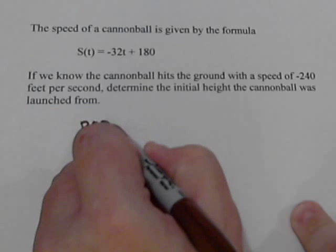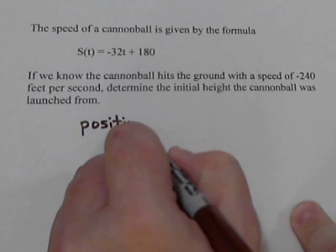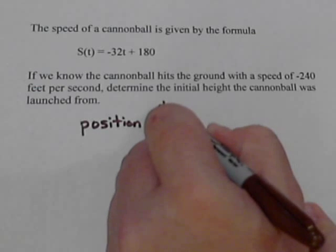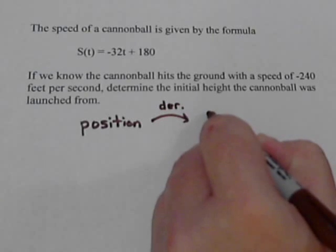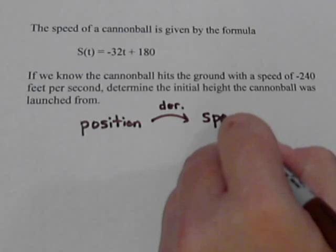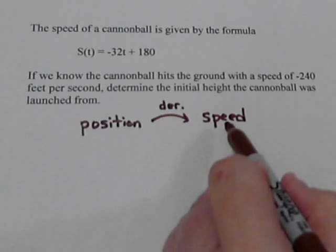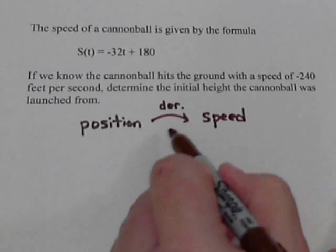So if we start out with the position and then take the derivative of it, that gives us the speed equation. And like most things in math, it works backwards.